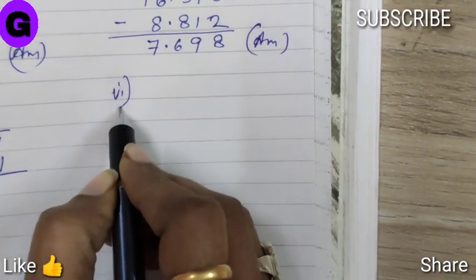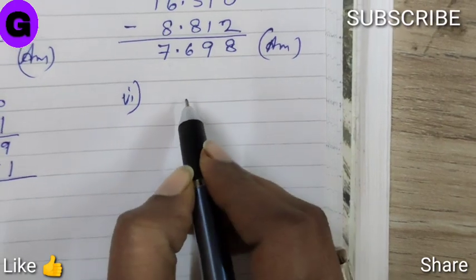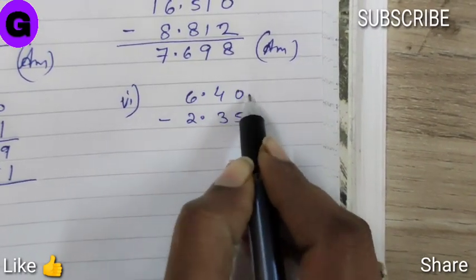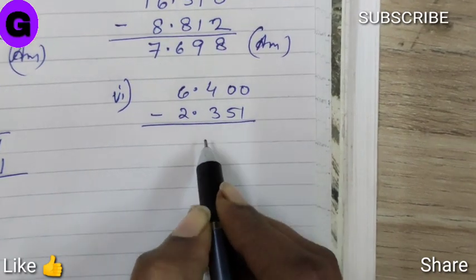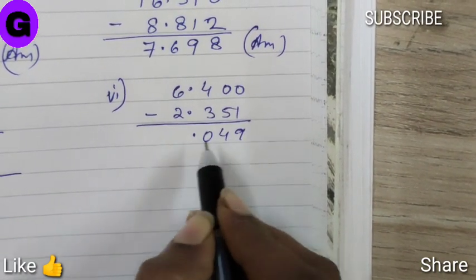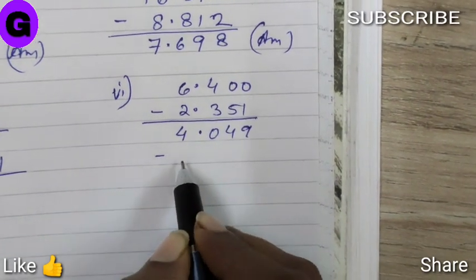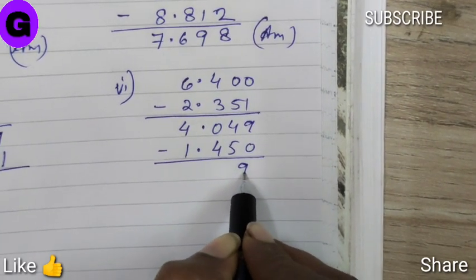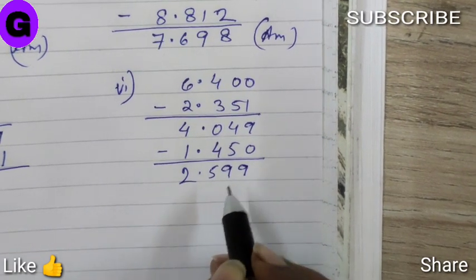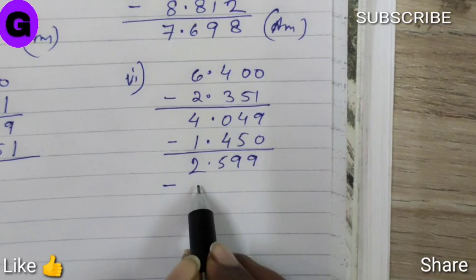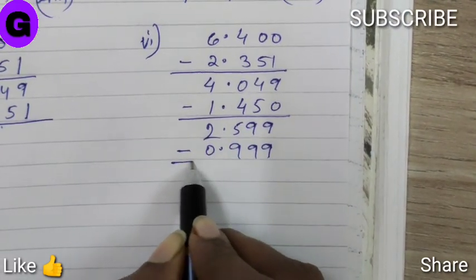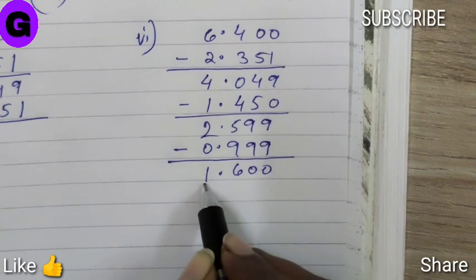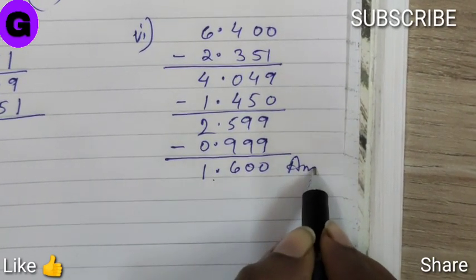Sum number 6. Sum number 6 all are negative numbers which we need to subtract. So we will do so step by step. Here after subtracting this we get the answer. Now from this answer we will further subtract 1.45. Now from this answer again we will subtract the final negative number and we will get. So 1.600 is the answer.